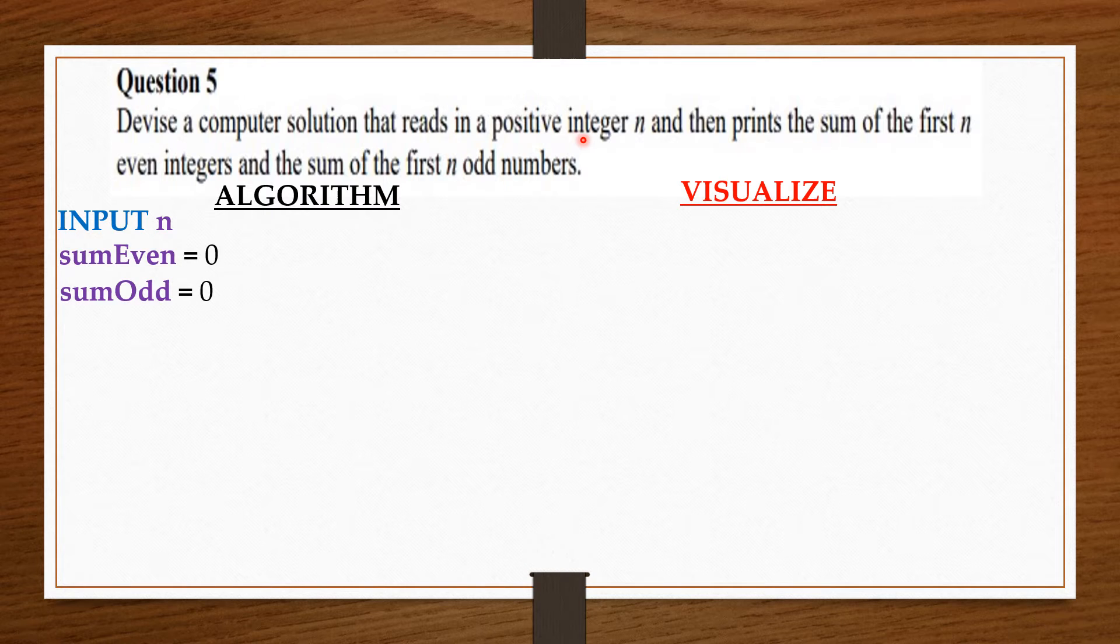So to check this we ensure that n must be greater than zero. So if n is greater than zero, then the sum of the first even numbers equals n times (n + 1).